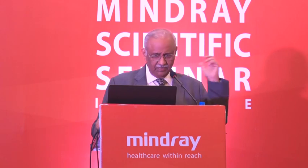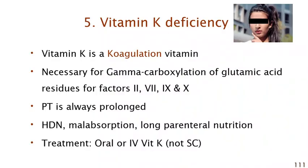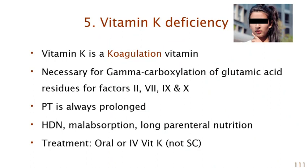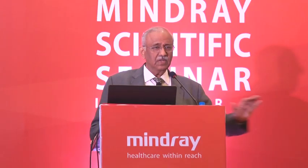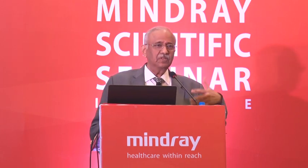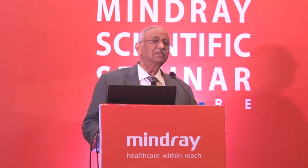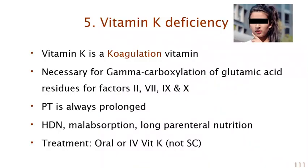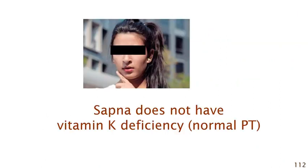Vitamin K is called K because it is a coagulation vitamin. Vitamin K is required for gamma-carboxylation of glutamic acid residues of factors 2, 7, 9, and 10. Clinically, the prothrombin time is prolonged in vitamin K deficiency. Common causes are hemorrhagic disease of the newborn, malabsorption, and parenteral nutrition in ICU patients. Treatment is oral or IV vitamin K. Since Sapna's PT is normal, she does not have vitamin K deficiency.